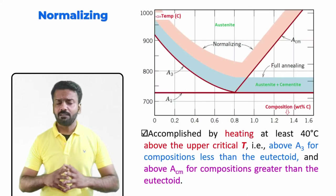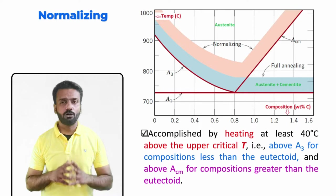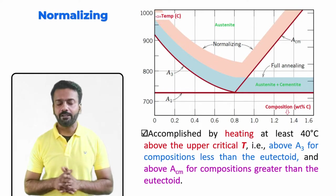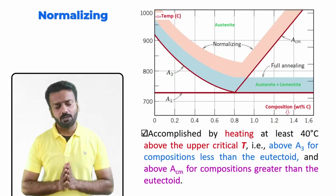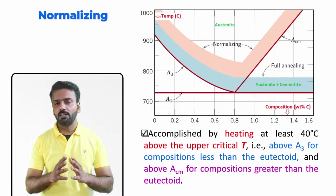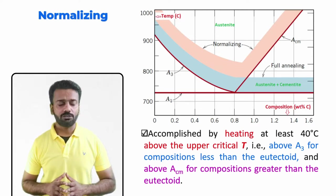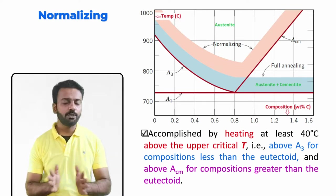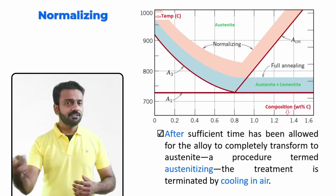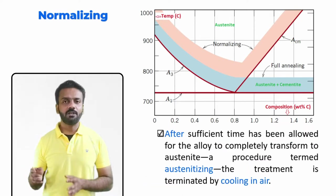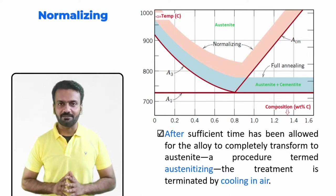This diagram shows the heating range for normalizing heat treatment. We can see that we are slightly above the annealing range and into the austenitic range for both hypo and hyper-eutectoid steels. From there, the material is taken out of the furnace, kept separately, and allowed to cool in air.